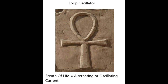Loop oscillators can lock on to an external reference signal, ensuring synchronization with other systems. This is vital for digital communication, where timing and phase alignment are critical. They can also adjust to changes in the input signal, providing reliable performance under different conditions. So I think the loop part of the symbol is representing the loop oscillator.